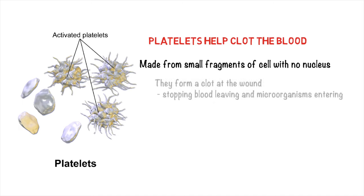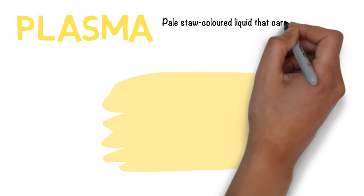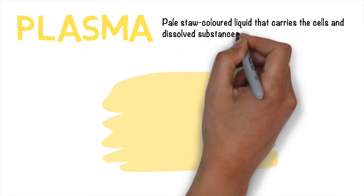And the idea is that they stop the body from losing too much blood, and they also stop microorganisms from entering. And they form a clot at the wound. So very important to stop us from being harmed. So we've got the three main types of cell, and then we've got this yellow straw-like liquid called plasma.